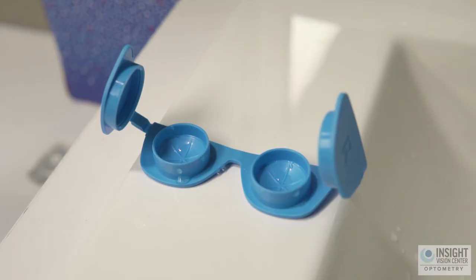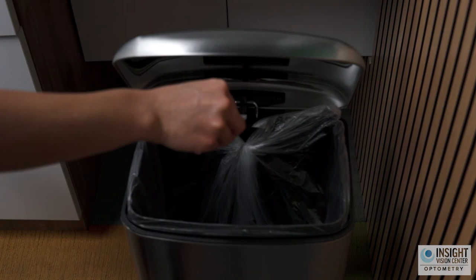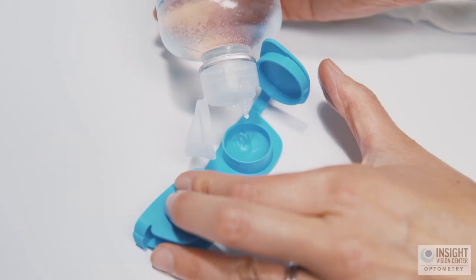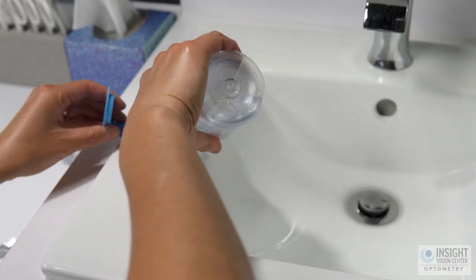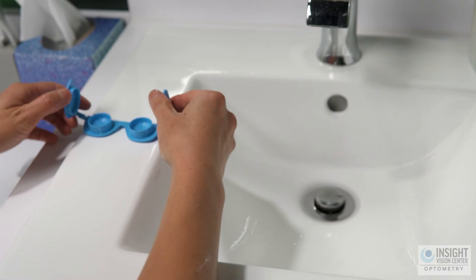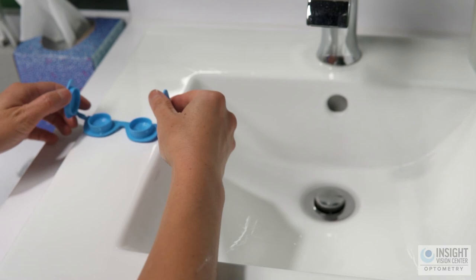Step 9: Allow your case to air dry when not in use to prevent bacterial growth. Discard your contact lens case every three months and replace them with a brand new one. Never reuse your solution. Always throw out the solution after you have left your contacts soaking in it. The solution has disinfecting properties to clean the lenses while they soak, so fresh solution should be used every night.